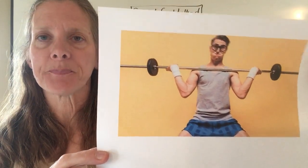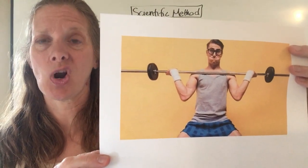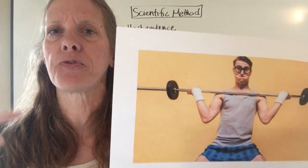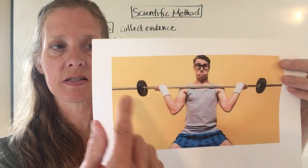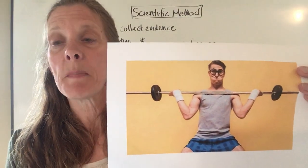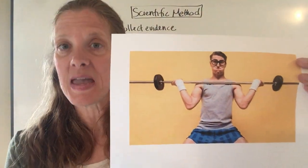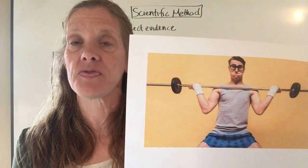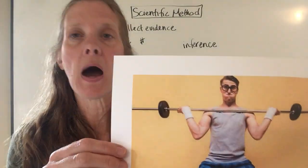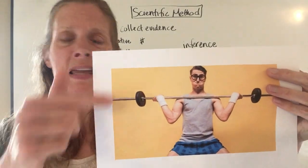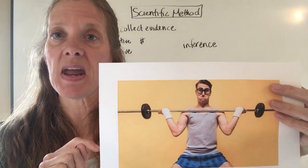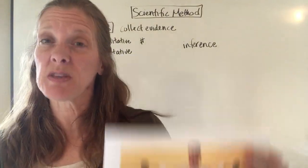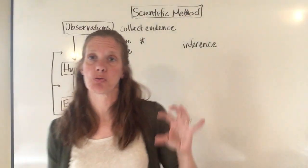If I want to make an inference, I might look at the picture and say, 'this guy's really not very strong,' because I know that heavy weights are usually much larger than these, and it appears he is struggling. That's an inference — a judgment made based on what I'm seeing. The observation would be 'he's making a very funny face,' but the inference is 'he's struggling to lift the weight.' You can't directly observe that someone is strong; you can only observe that they can or can't lift something.